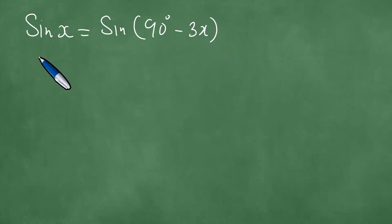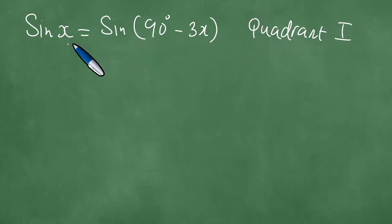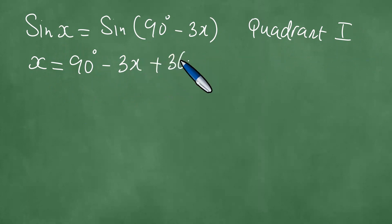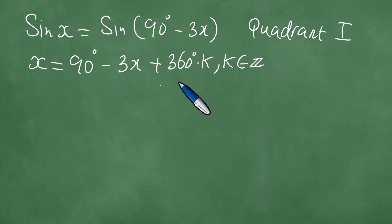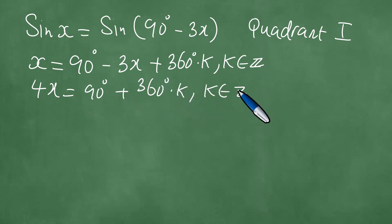And what is the meaning of this? Well, it means we are dealing with quadrant 1, because it's 90 minus. So we proceed to find the general solution: x plus 90 degrees minus 3x, and we add 360 degrees times k, where k is an element of Z. This means 4x equals 90 degrees plus 360 degrees times k, where k is in Z.